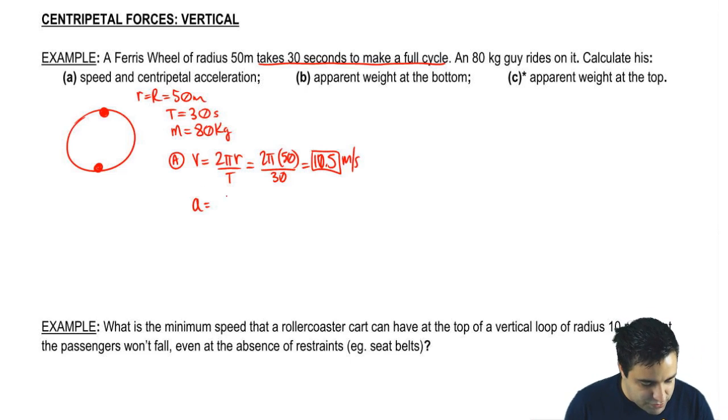So nothing weird here. And for acceleration, it's just v squared over r. Again, nothing weird, straightforward. 10.5 squared, r is 50, and if you do this, you'd get 2.2, 2.2 meters per second squared. So hopefully you agree that that part is straightforward.